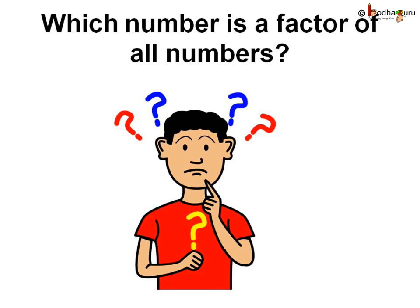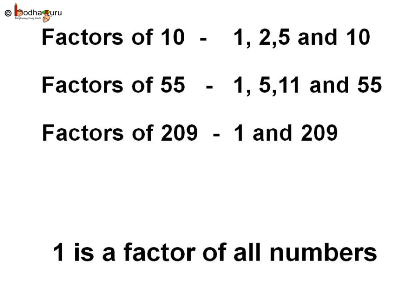You might be thinking, is there a number which is a factor of all numbers? Yes, there is. Factors of 10: 1 multiplied by 10 equals 10, and 2 multiplied by 5 is equal to 10, so 1, 2, 5 and 10 are the factors of 10. What about 55? 1, 5, 11 and 55 are the factors of 55. Factors of 209: 1 multiplied by 209 is equal to 209, so 1 and 209 are the factors of 209. We see that 1 is a factor of all the numbers.